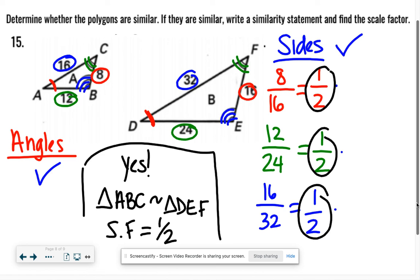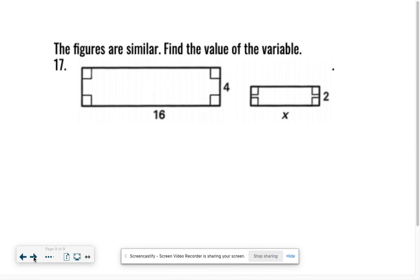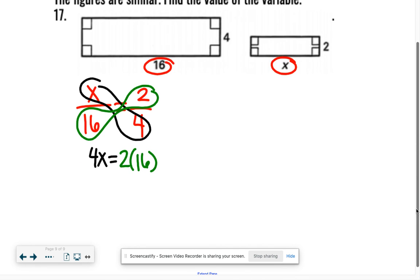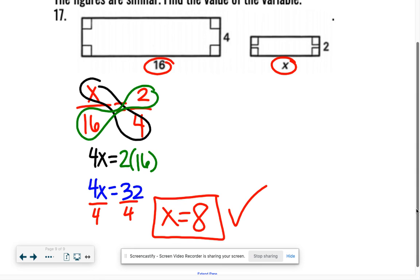One more before you are let loose to work on your own. Number 17. The figures are similar - find the value of the variable. Let's just start with our variable X. I'm going to have X. What does X match? It matches 16. Is equal to - come back to the small one, because that's where we started - so 2. And 2 matches 4. Now we just cross-multiply. We're going to have 4X is equal to 2 times 16. 4X, 2 times 16 is 32. Divide out: divide by 4, divide by 4. X equals 8. Love to see it, you guys.